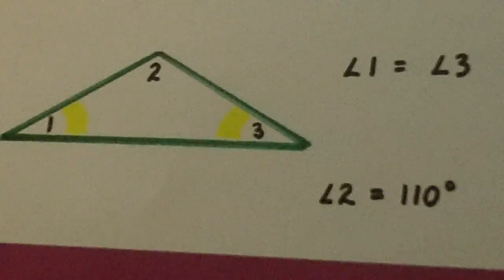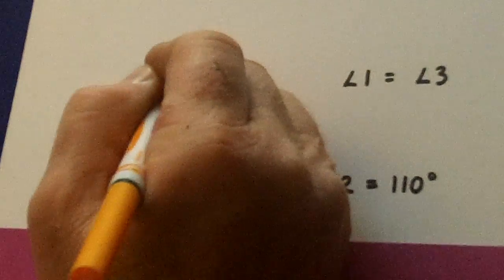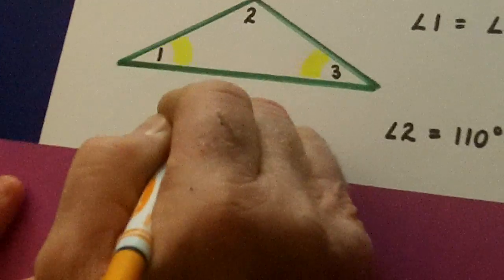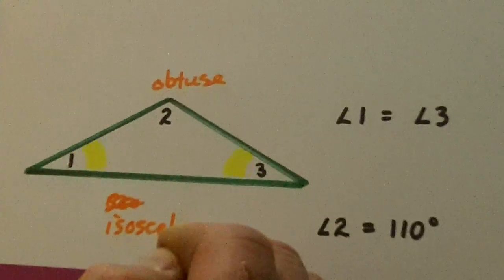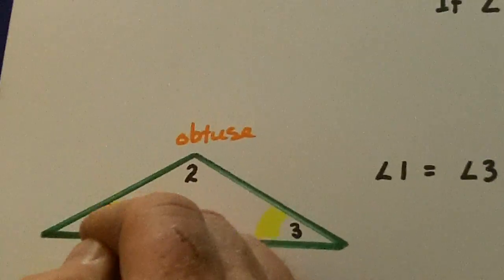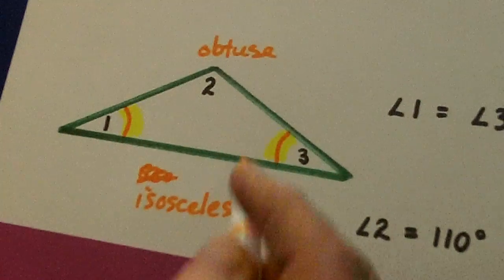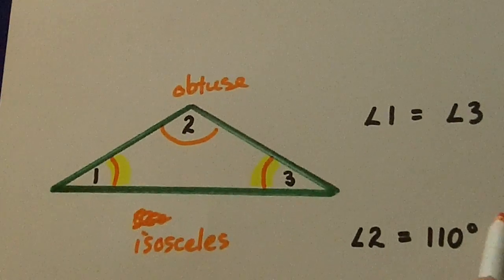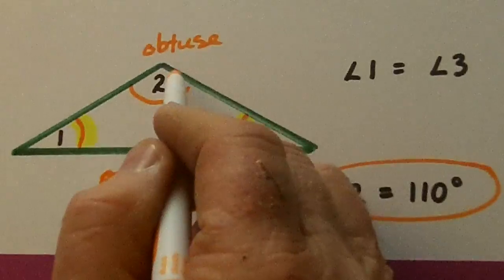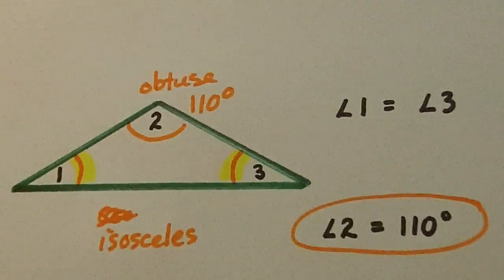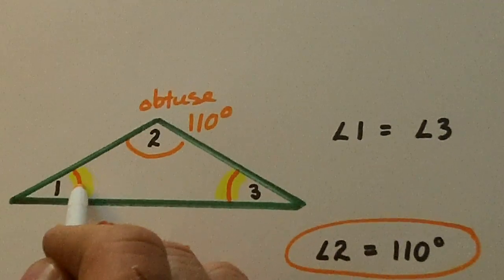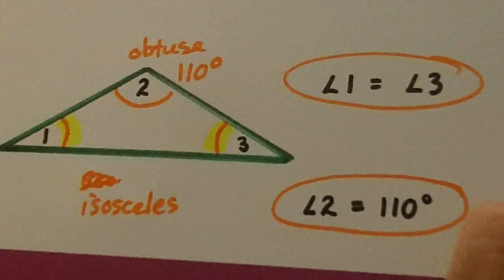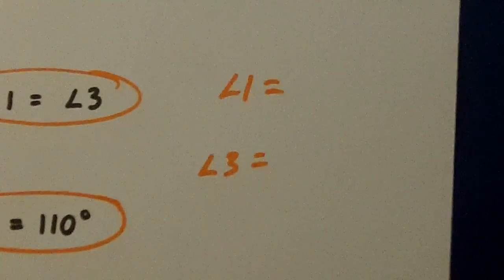Let's go down here. This is an obtuse isosceles triangle where two angles are the same and then this big obtuse angle there. Our obtuse angle is 110 degrees, and angle one is equal to angle three. So how much are each of angle one and angle three in degrees?